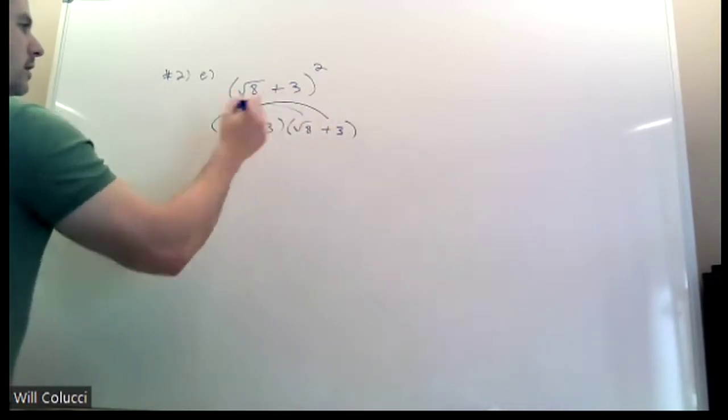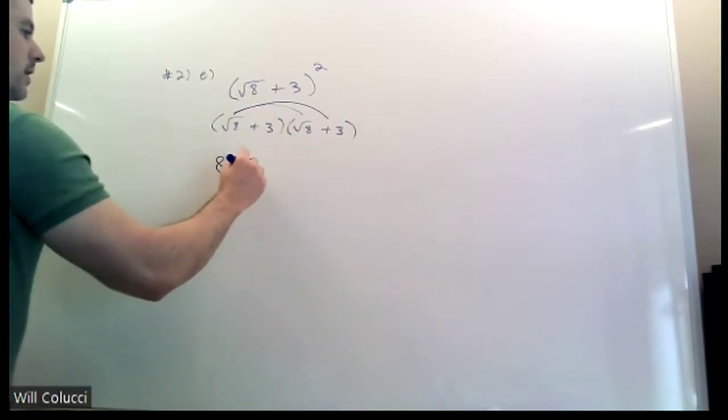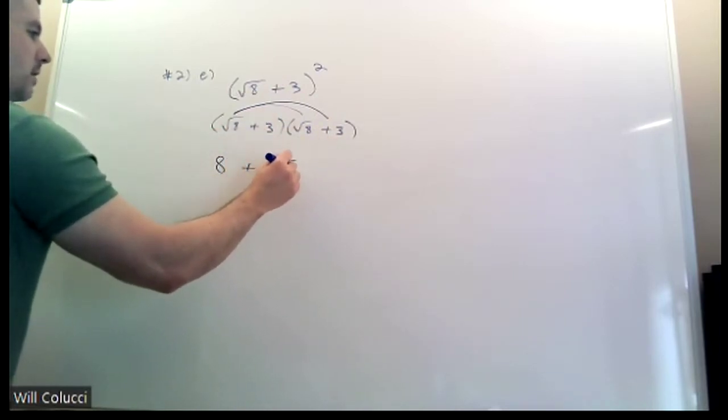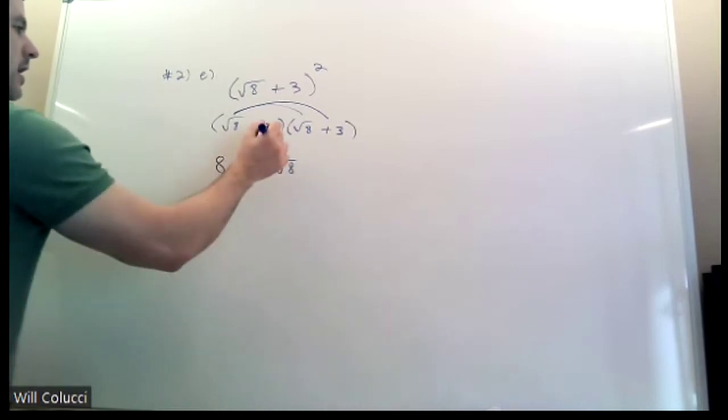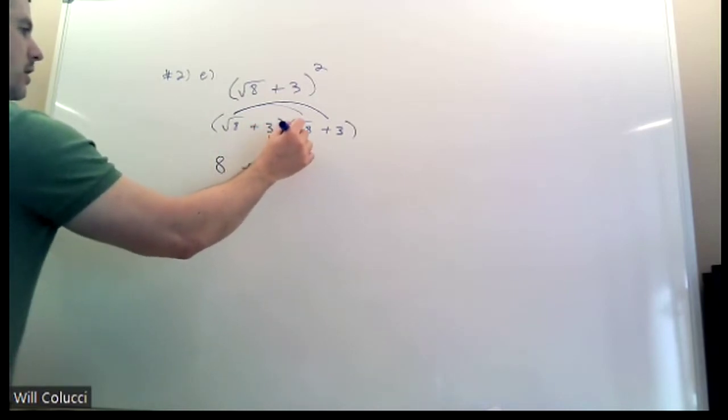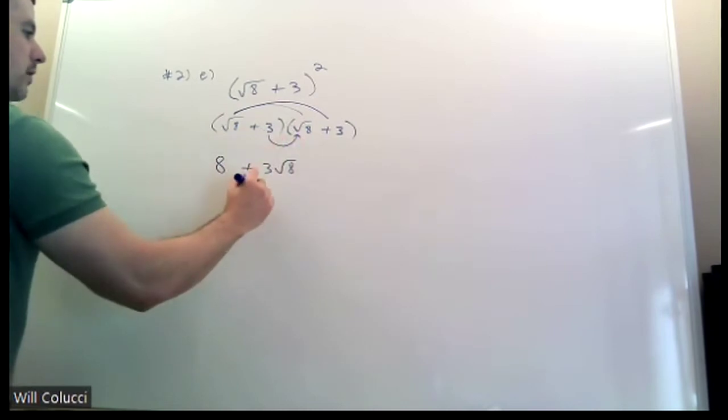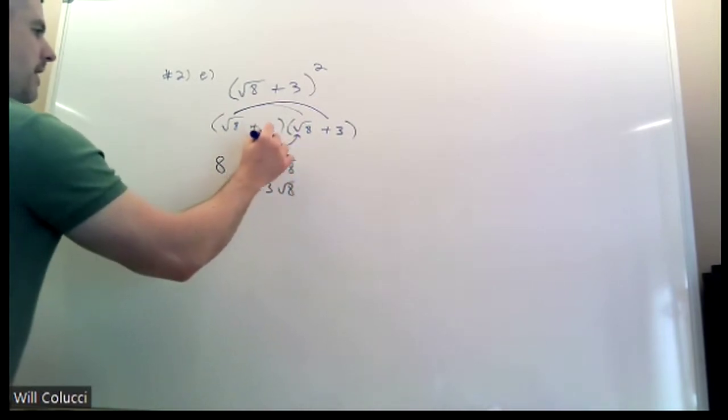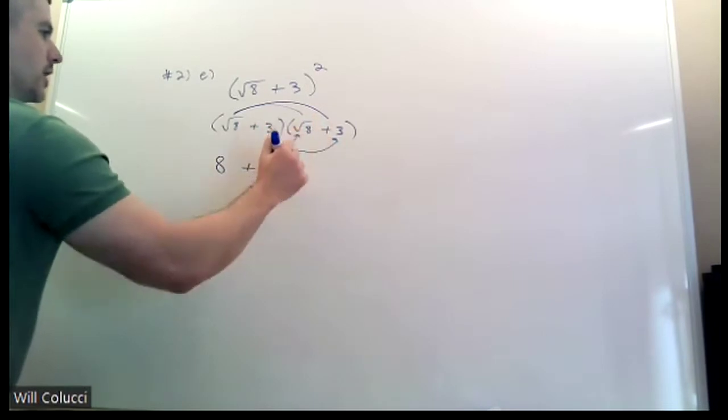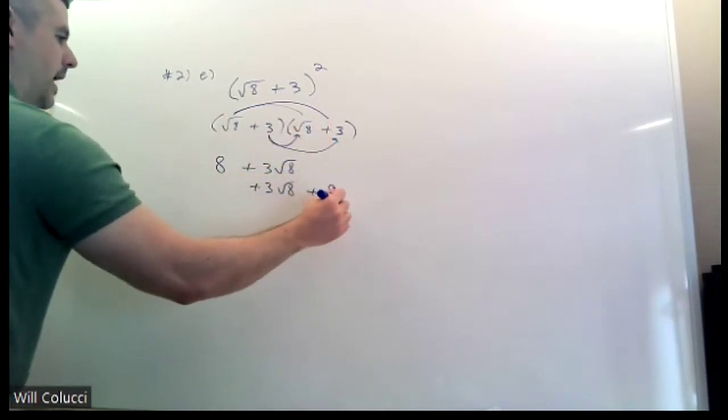And then the outer, radical 8 times a positive 3 is positive 3 radical 8. So that's done. Now switch to the second one and do the inner. Positive 3 times radical 8 is another positive 3 radical 8. And then at the end, you have a positive 3 times a positive 3, which is positive 9.